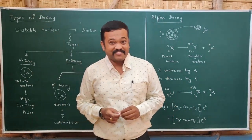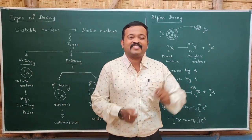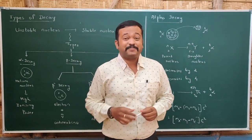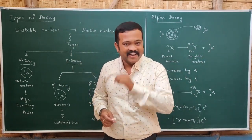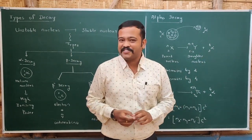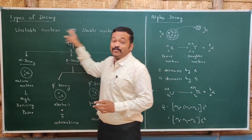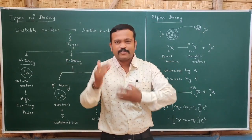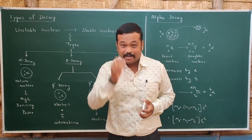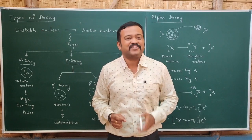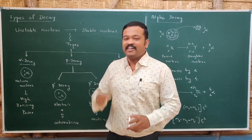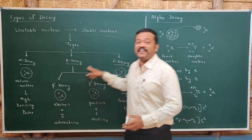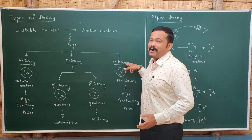Welcome to part 6 of nuclei, that is types of decay. Decay takes place in an unstable nucleus. An unstable nucleus always wants to become stable, and in that process it emits certain kinds of radiation. Based upon the types of radiations emitted, decay can be classified into three types: alpha decay, beta decay, and gamma decay.